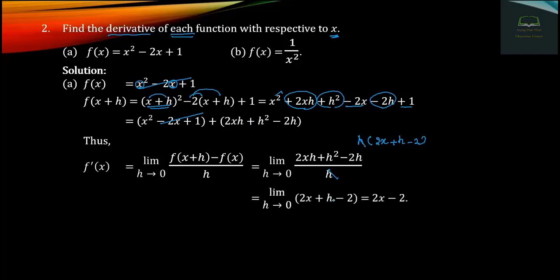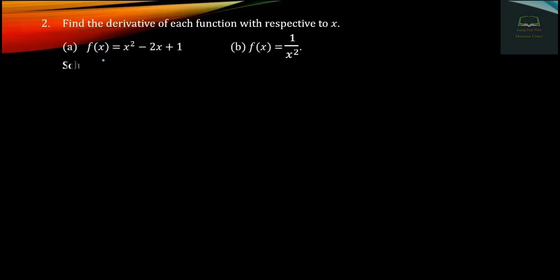So h equals zero gives 2x minus 2. That is the result for this function. Question B: f of x equals 1 minus x squared. The derivative involves 1 minus x squared, plus x plus x terms.